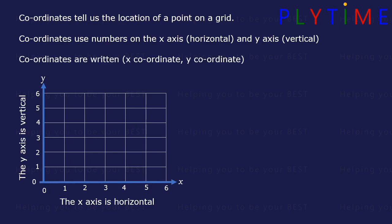Coordinates are always written: open bracket, x-coordinate, comma, y-coordinate, close bracket.